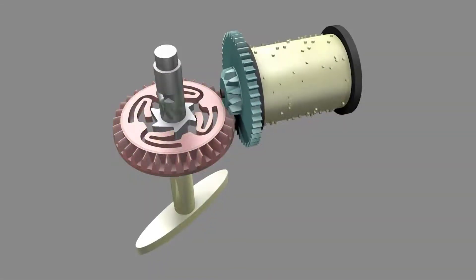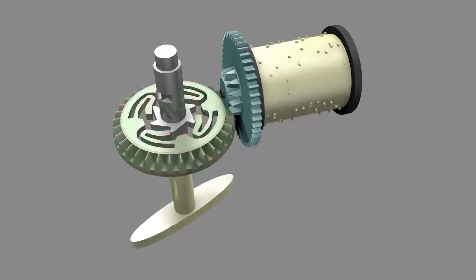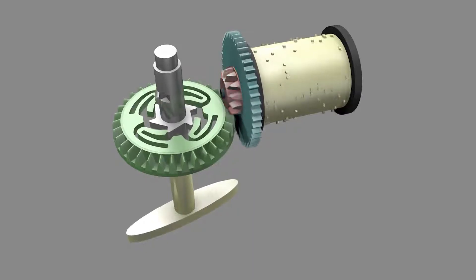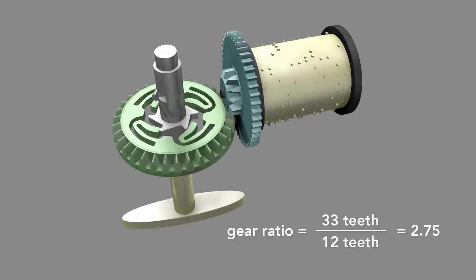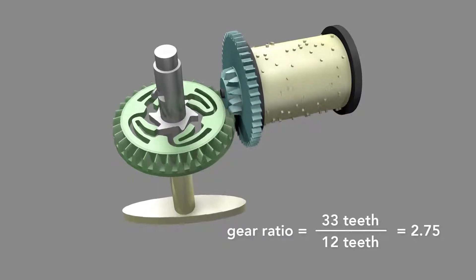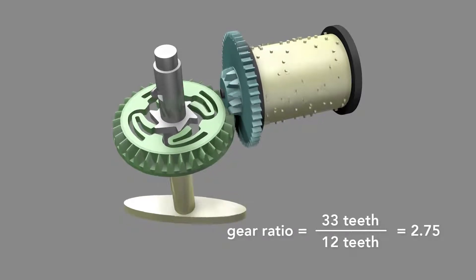To spin the governor so fast, the music box uses a multiplying gear train. It starts with the bevel gear driven by a spring, which engages a smaller gear on the drum. This multiplies the rotational rate by the ratio of the number of teeth on the larger gear to the number of teeth on the smaller gear, here 2.75 times.